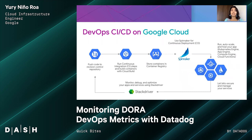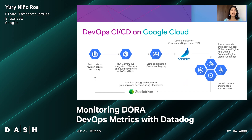This is the way a classical pipeline works in Google Cloud, for example. When you push code in Cloud Source Repositories, it triggers a pipeline that runs continuous integration steps and builds containers with Google Cloud Build. These containers are stored in Container Registry. And finally, with the help of Spinnaker, the code can run, auto-scale, and heal — with Kubernetes Engine, App Engine, Compute Engine, or Cloud Functions, for example.